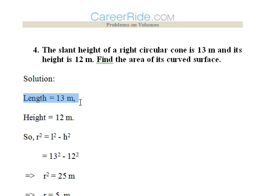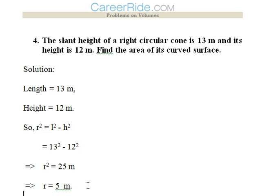We have got the slant height l that is 13 meter and we have got the height that is 12 meter and it is the right circular cone. So 13² minus 12² we get r² is equal to 25. So r from here we can get 5 meter.